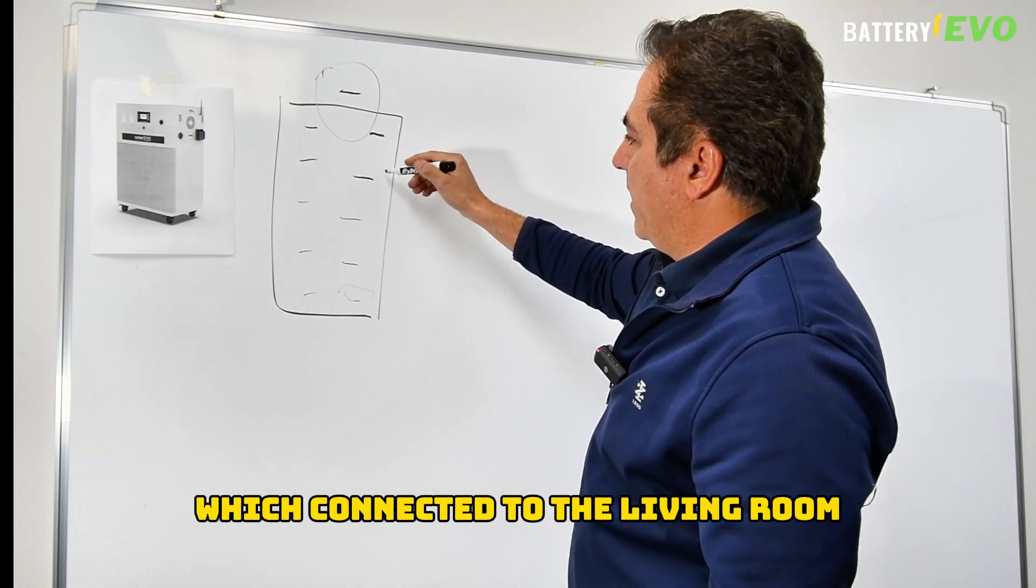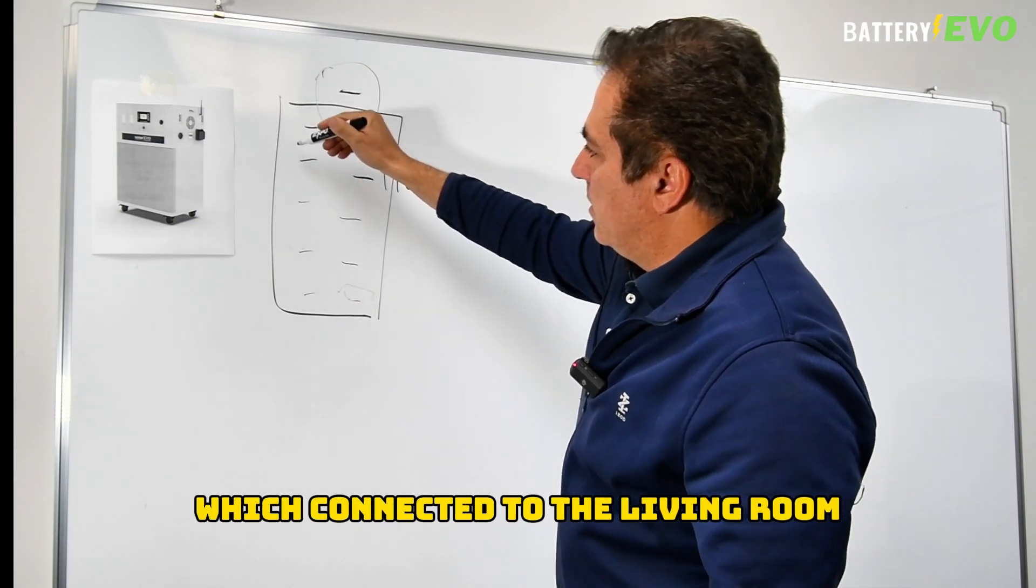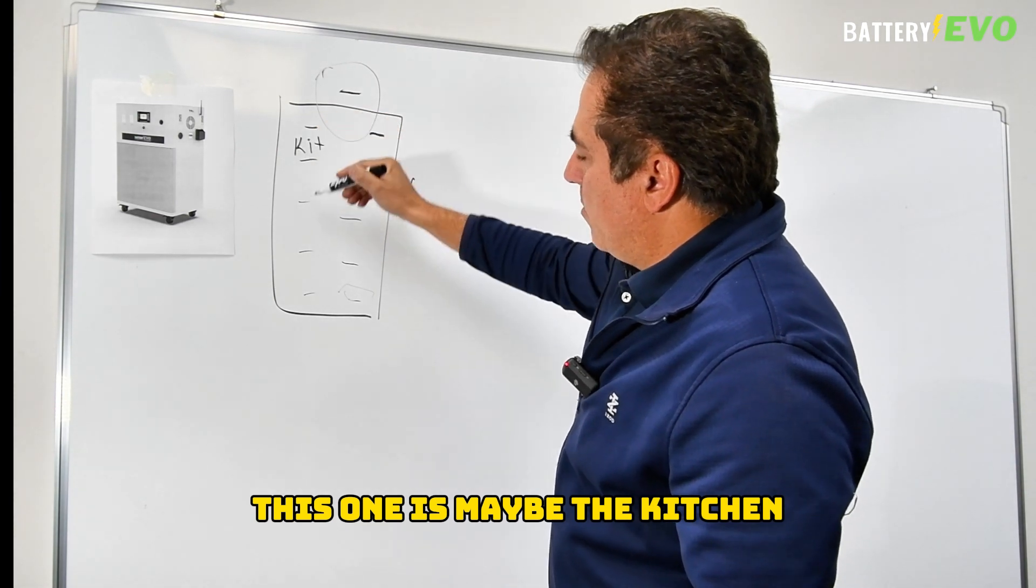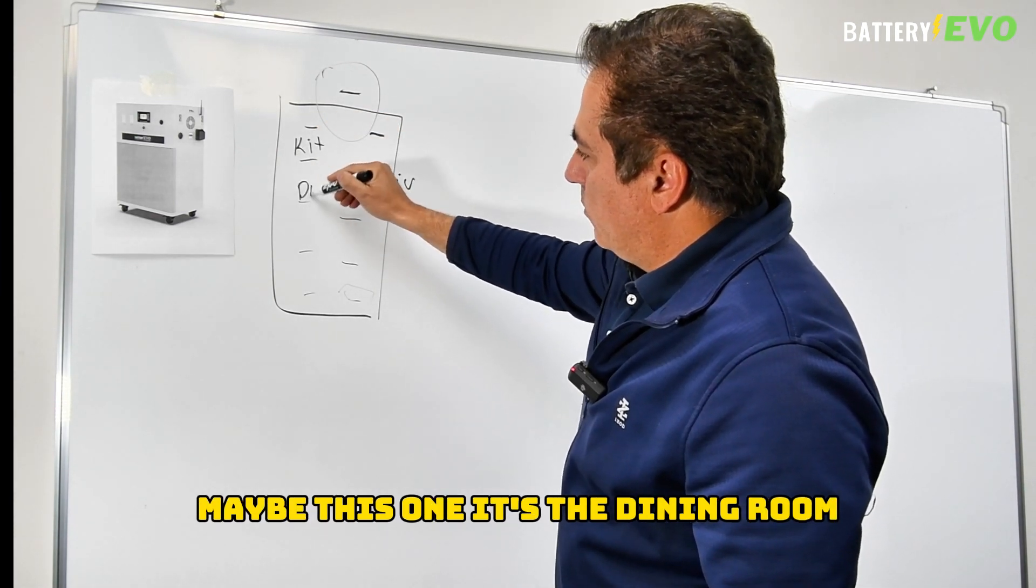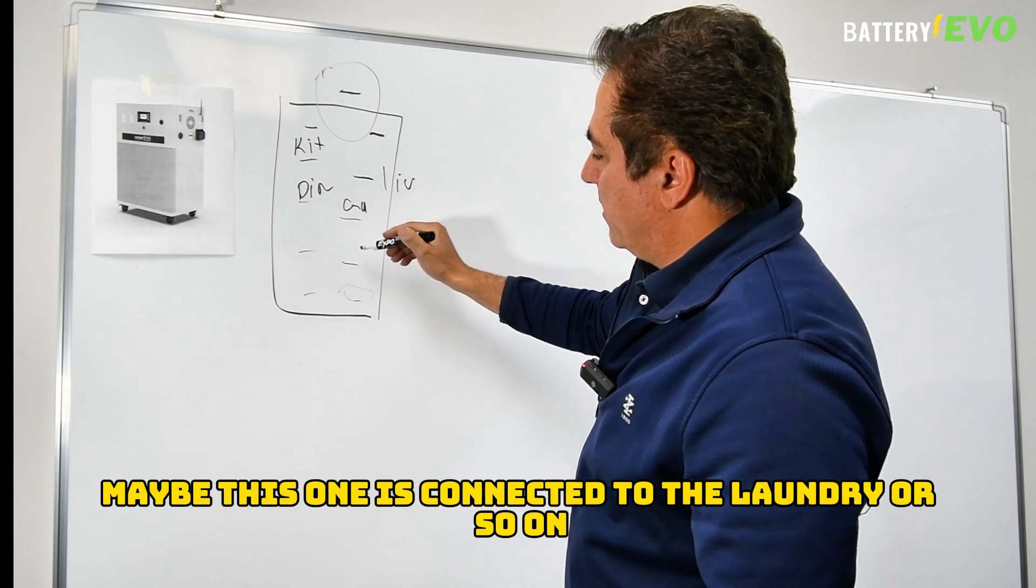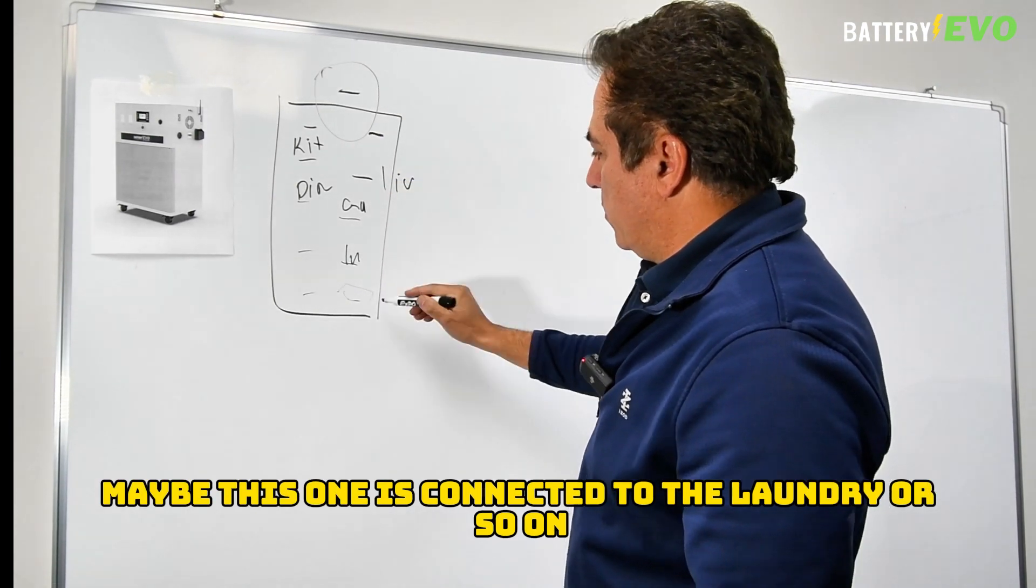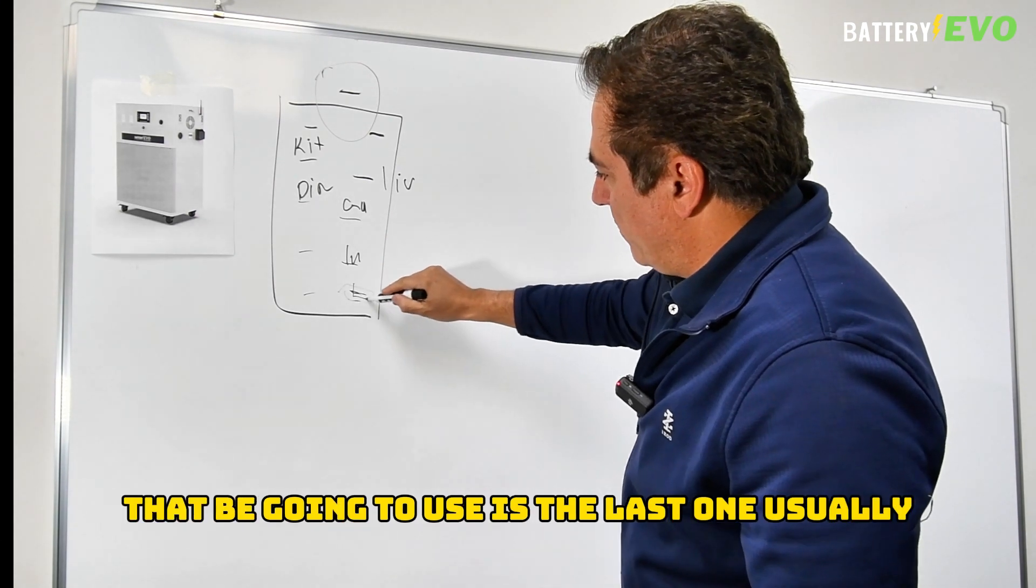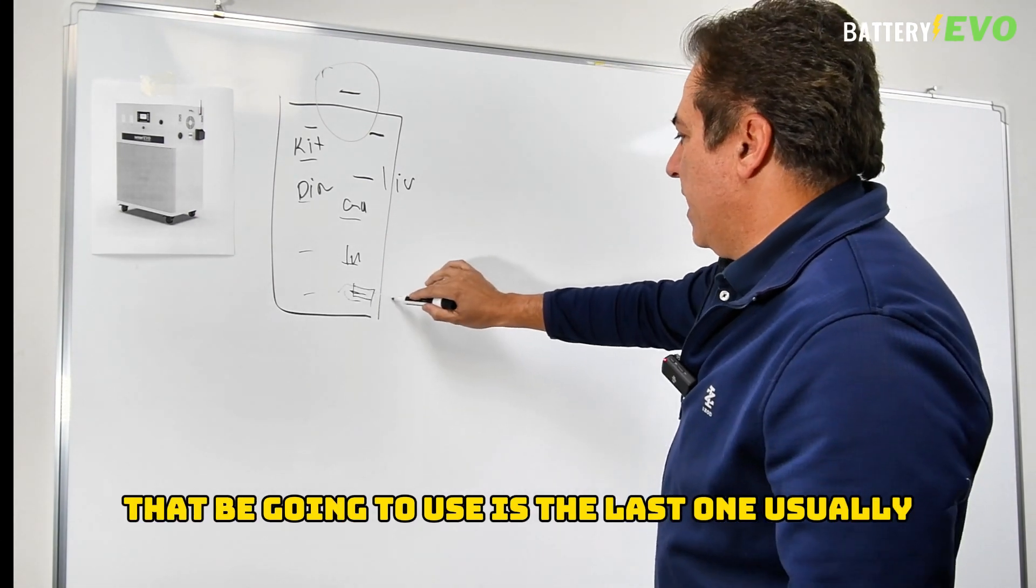We have a bunch of breakers which are connected to the living room. This one is maybe the kitchen, maybe this one is the dining room, maybe this one is the garage, maybe this one is connected to the laundry, and so on. One of the breakers that we're going to use is the last one usually, and this breaker will be connected to the sub panel.